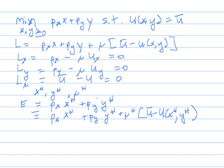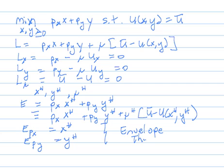The envelope theorem itself says the following results. So this messy thing, e sub p_x, actually is equal to x^h, and e sub p_y is equal to y^h. This is the envelope theorem, and it is the key result. And after a little pause, we'll actually show why that is true.